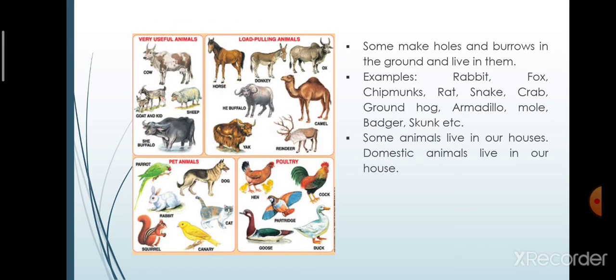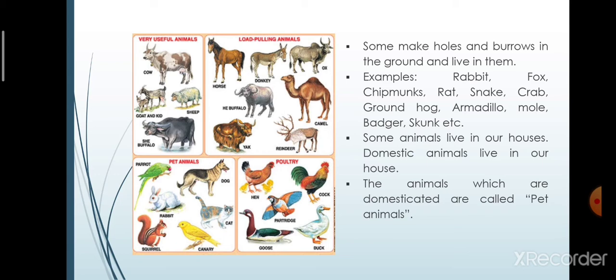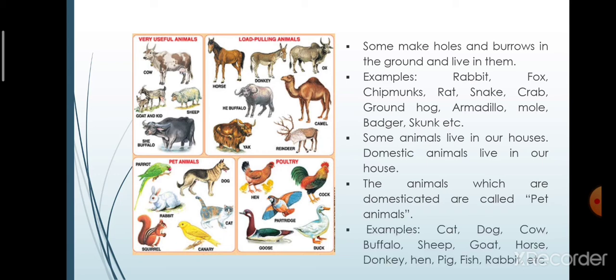Some animals live in our houses. Domestic animals live in our house. The animals which are domesticated are called pet animals. Examples are: cat, dog, cow, buffalo, sheep, goat, horse, donkey, hen, pig, fish, rabbit, etc.